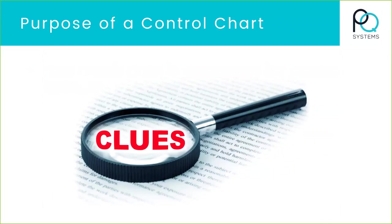When you look at a control chart, you're looking for clues. Does it present any clues? Do you see anything that looks odd? Don't try to overanalyze the chart. If it looks in control, it probably is — move on. But if you do see clues or out-of-control points, see what's going on and take action.